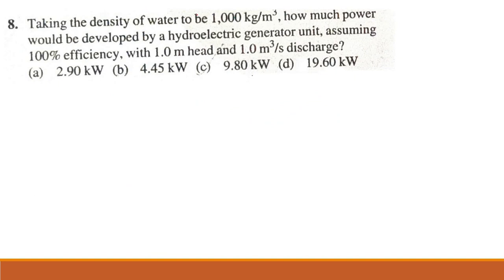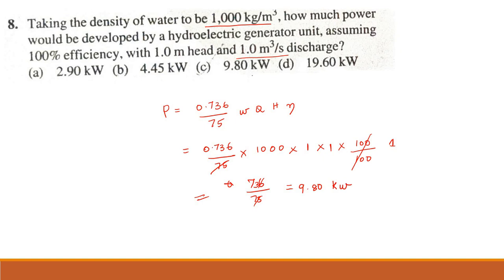Problem 8. Taking the density of water to be 1000 kg/m³, how much power would be developed by the hydroelectric generator unit, assuming 100% efficiency with 1 meter head and 1 m³/s discharge? The formula is P = 0.736/75 × W × Q × H × eta. So 0.736/75, density of water is 1000 kg/m³, discharge is 1, head is 1, eta is 100/100 which is 1. Multiplying 0.736 with 1000 gives 736 divided by 75, the answer is 9.80 kilowatts. Option C is correct.